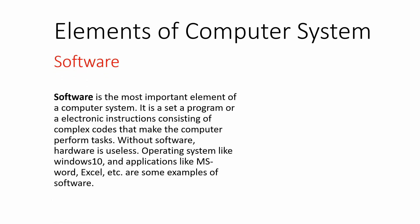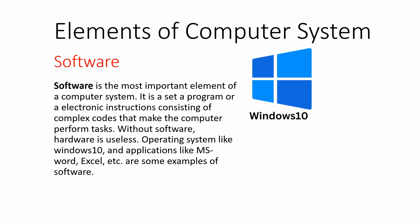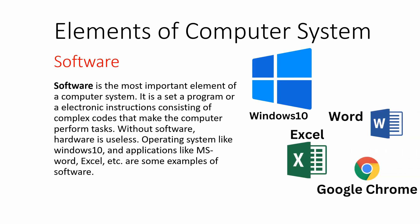The next element of a computer system is software. Software is the logical part of the computer system. It is the set of programs consisting of complex codes that make the computer perform tasks. Without software, our hardware is useless, because the software gives instructions to the hardware to perform tasks. It may be the operating system like Windows 10 or Windows 11, and other application software like Word, Excel, or PowerPoint. So software is another important element of the computer system.